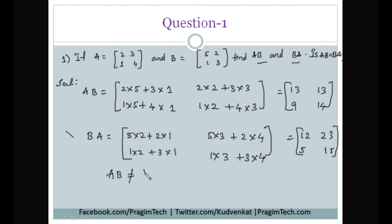As you can see, AB is not equal to BA. Therefore we can say that multiplication of matrices is not commutative. In the next session we will solve more questions based on operations of matrices. Please subscribe to our channel for the latest updates. Thank you for listening, and have a nice day.